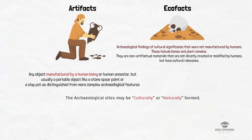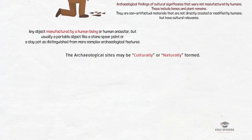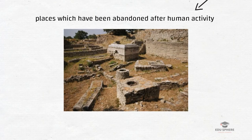Archaeological sites may be culturally or naturally formed. Cultural formations are places which have been abandoned after human activity — for example, digging pits for garbage disposal, discarded things, or accidental activities such as loss of objects. All these can be found in a cultural formation.